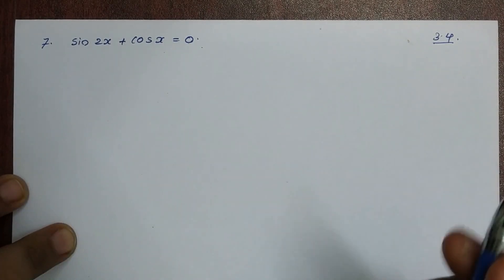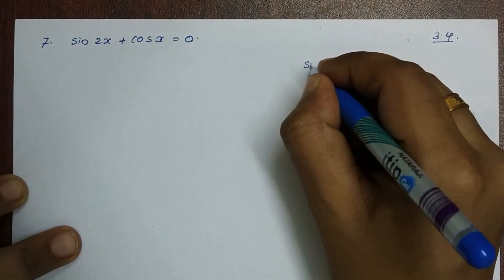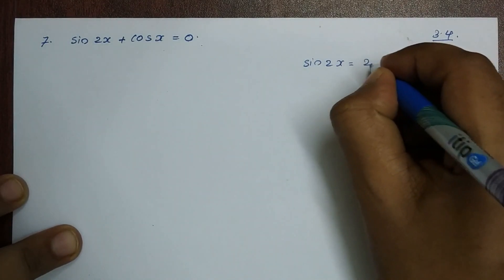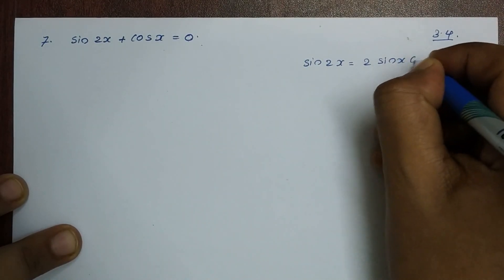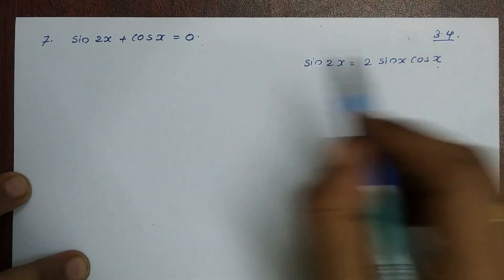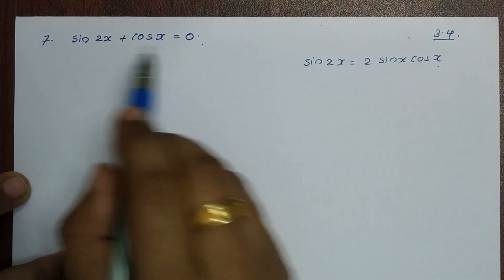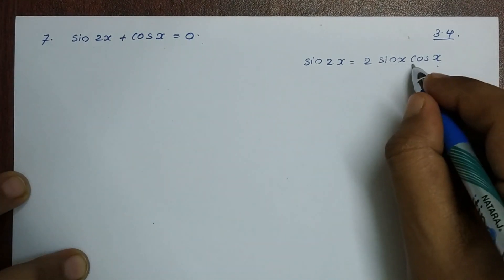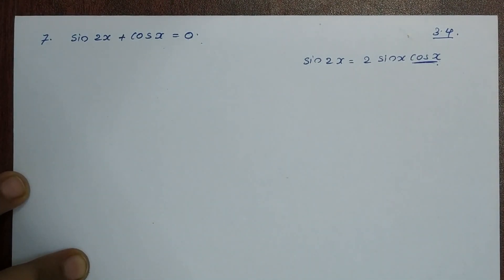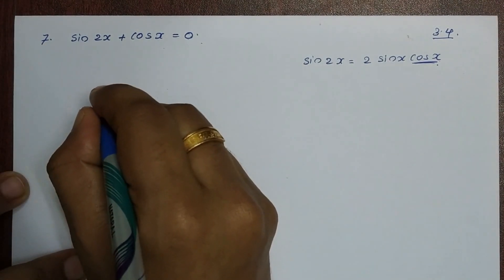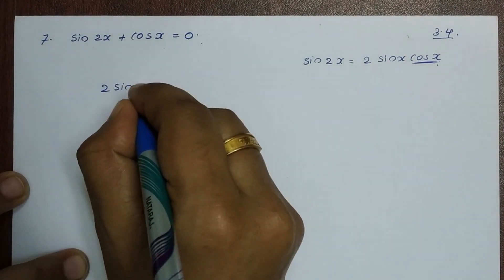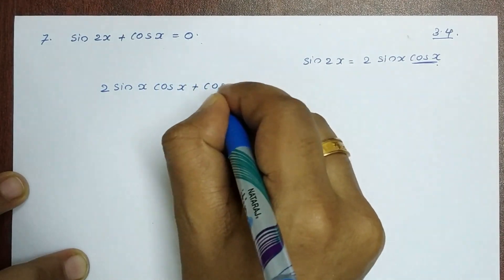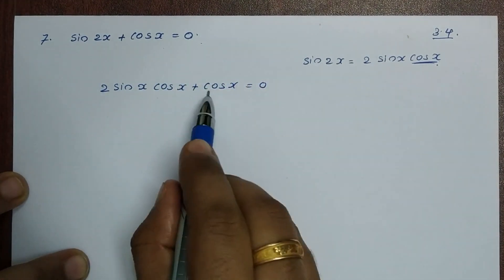We expand sin2x using the double angle formula: sin2x equals 2sinx cosx. So sin2x plus cosx gives us 2sinx cosx plus cosx equals 0. The cosx is common here.